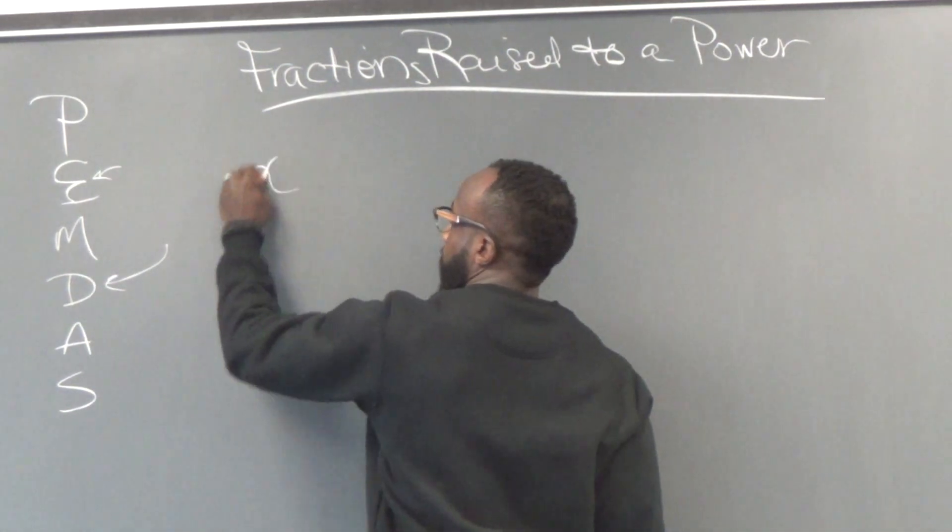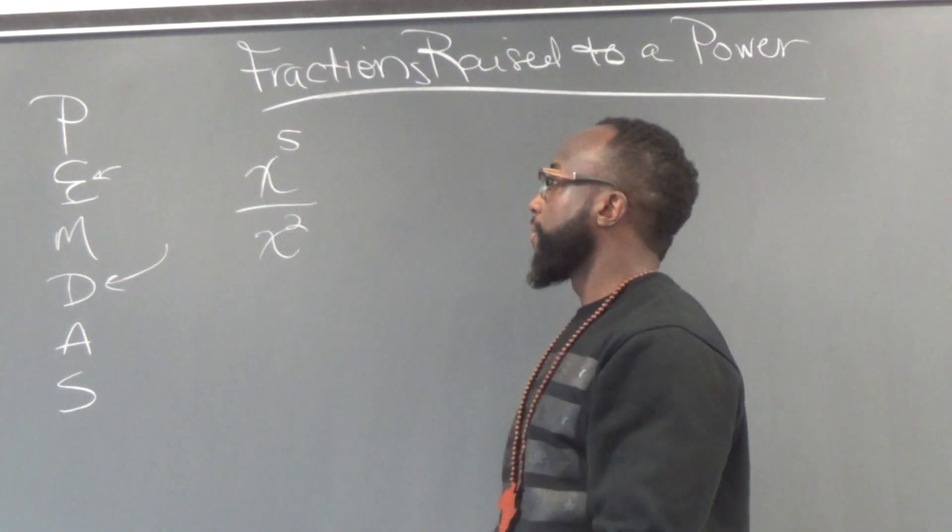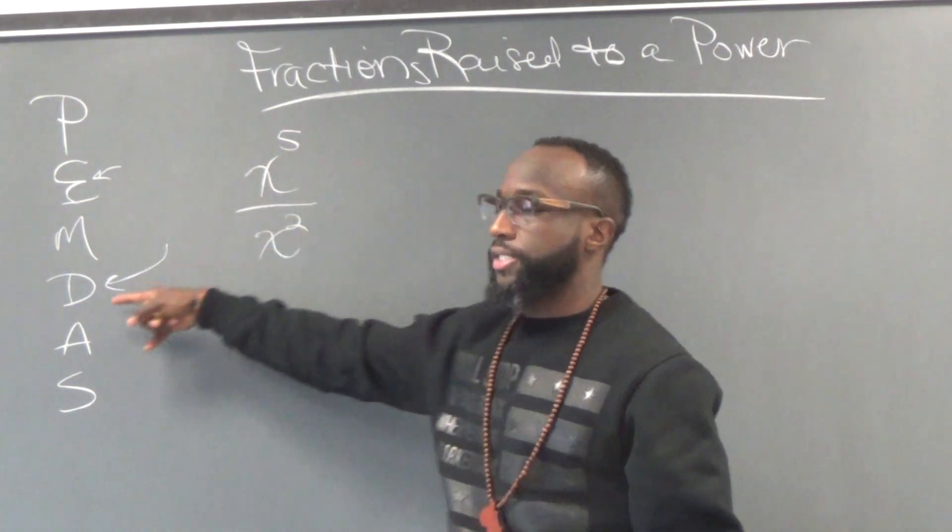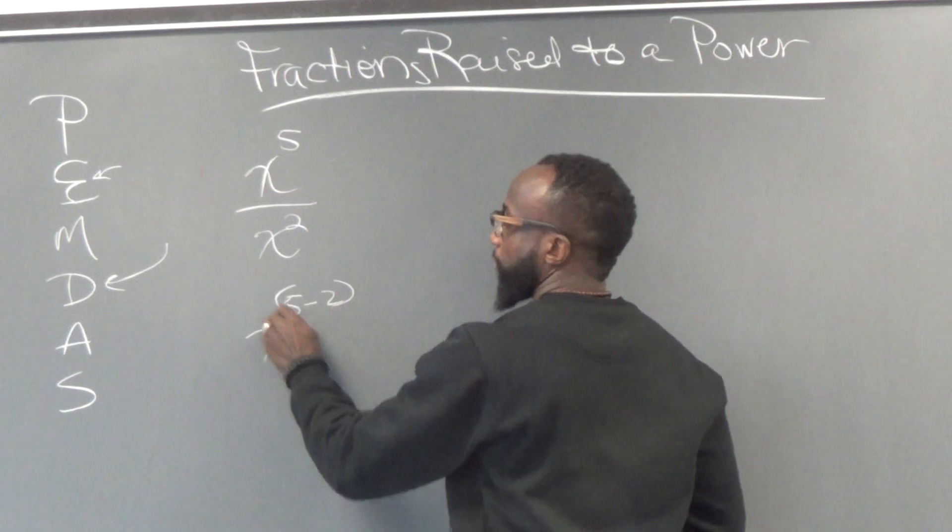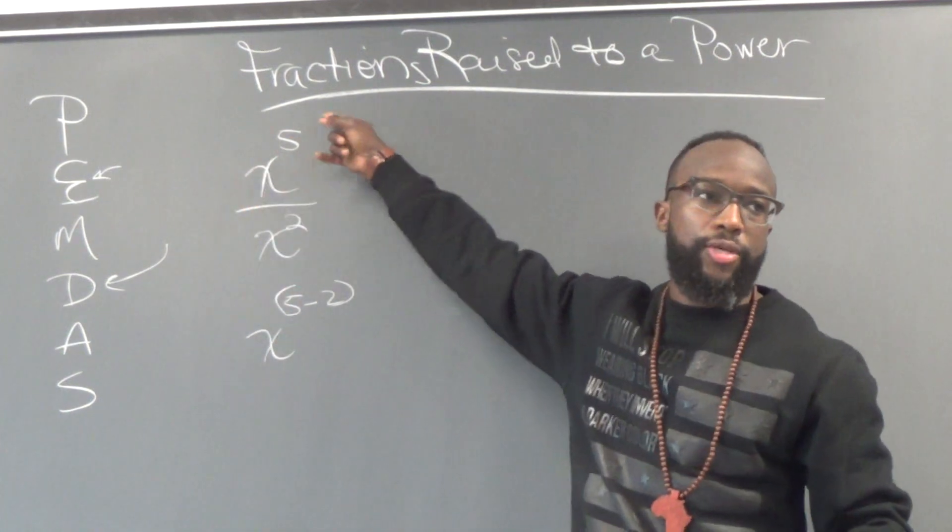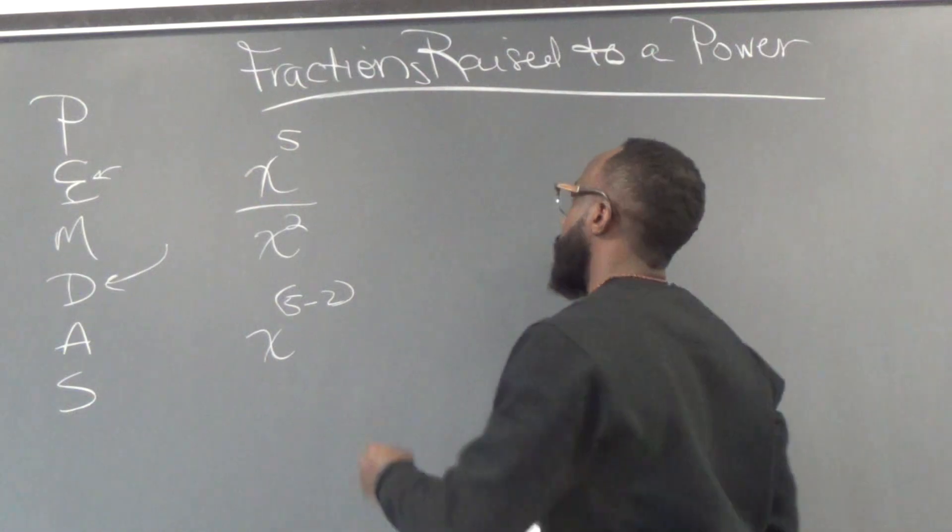Fractions like so. So we had x to the fifth yesterday over x to the second. What we did was division. And in division, we end up with x to the five minus two. Whenever we divide variables raised to a power, we subtract the exponents. Today, we're going to look at something like this.